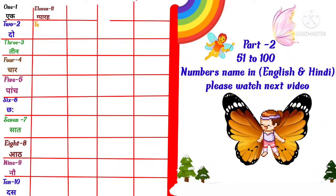T-W-E-L-V-E, 12 means twelve. T-H-I-R-T-E-E-N, 13 means thirteen.